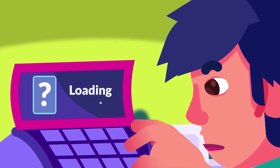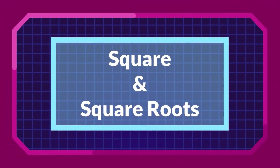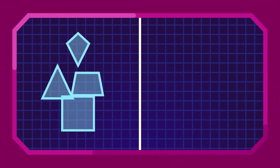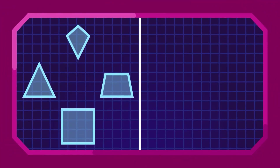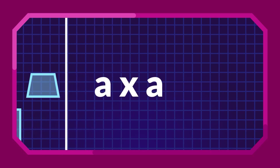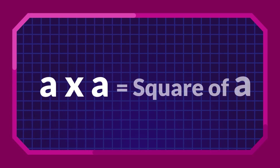First of all, what do we mean by the square of a number? In mathematics, square can possibly mean two things: a type of geometry and a product of self-multiplication. When a number is multiplied by itself, the product is known as the square of that number.